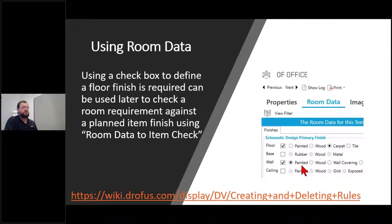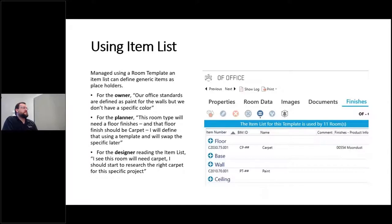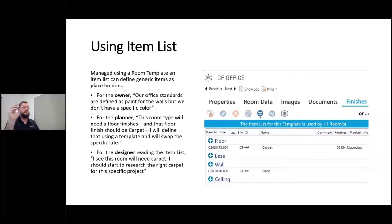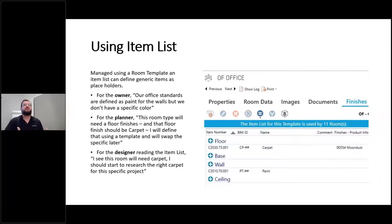The other approach is using items. We've talked about room data being text-driven with checkboxes and drop-down menus. With items, even though we're talking about paint on a wall or carpet on a floor, someone has to physically make a decision and make a product purchase — a gallon of paint or a certain number of carpet squares. Thinking of these as items to be procured shifts the approach. As a planner, I use carpet and paint generically as placeholders to get to a schematic design level.